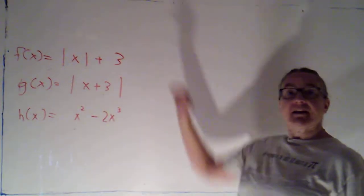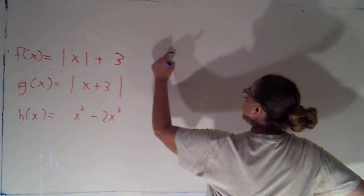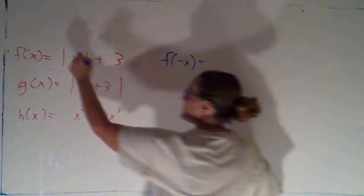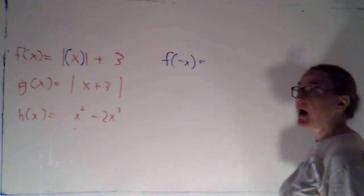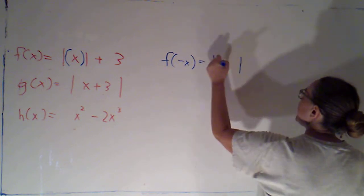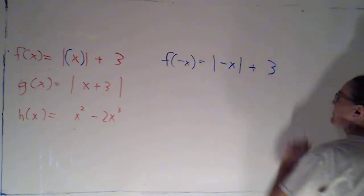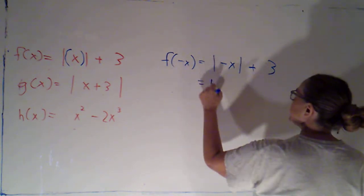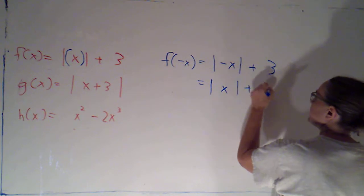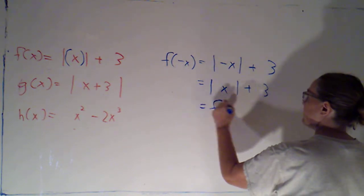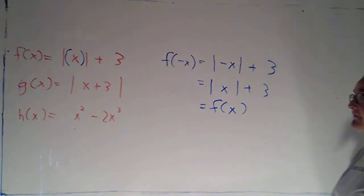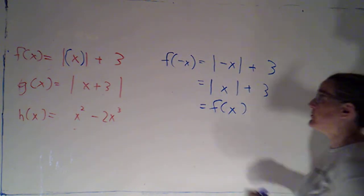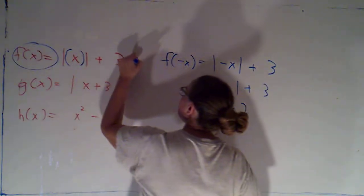If I look at f of x here, if I want to test for whether it's even or odd, I'm going to evaluate f at the opposite input. So I'm just replacing all my x's with the opposite of x. This would be the absolute value of the opposite of x plus 3. The absolute value of the opposite of x is exactly the same as the absolute value of x, and that gives me exactly the same formula as f of x. So opposite input gives me the same output — f of x is going to be even.